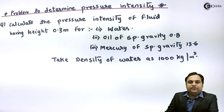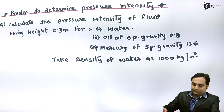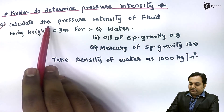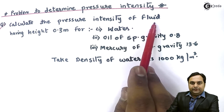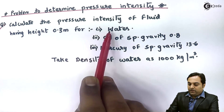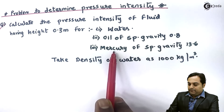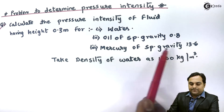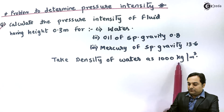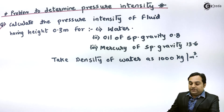Hello friends, in this video we will see a problem to find out pressure intensity of a fluid. The question is: calculate the pressure intensity of a fluid having height 0.3 meter for water, oil of specific gravity 0.8, and mercury of specific gravity 13.6. Take density of water as 1000 kg per meter cube.